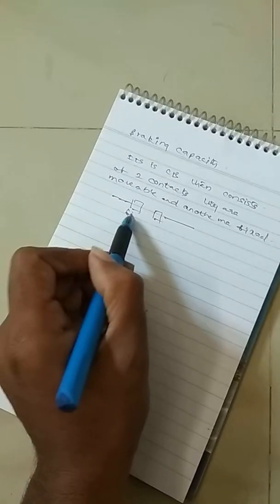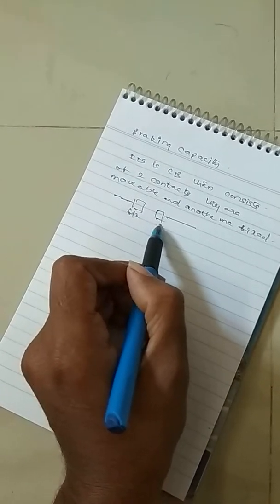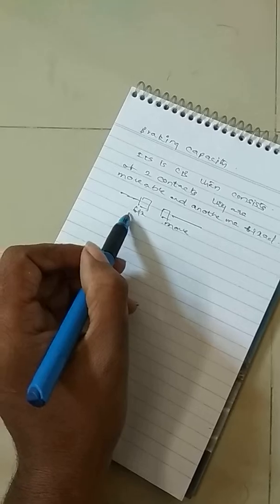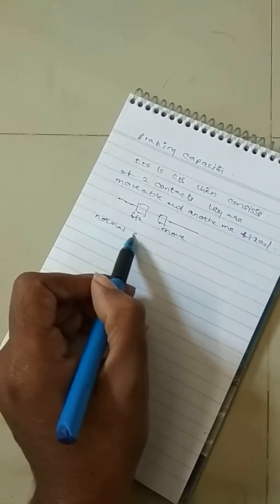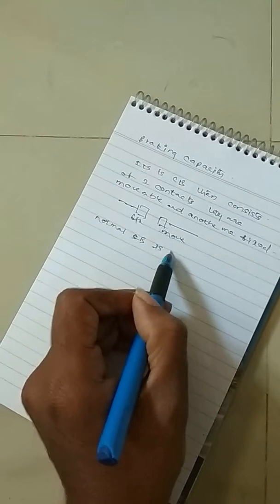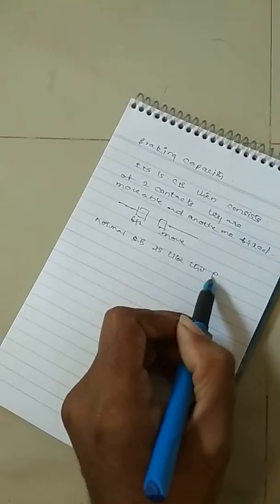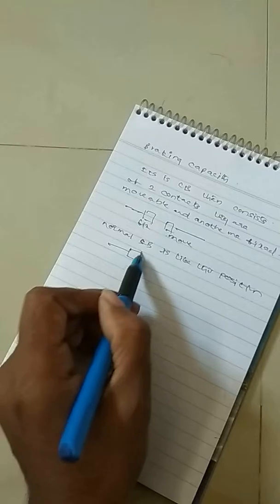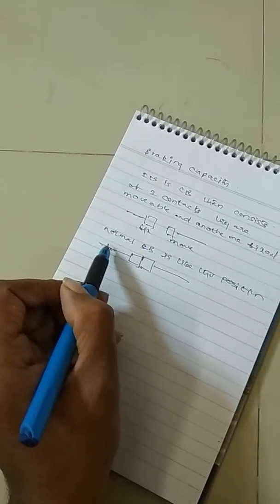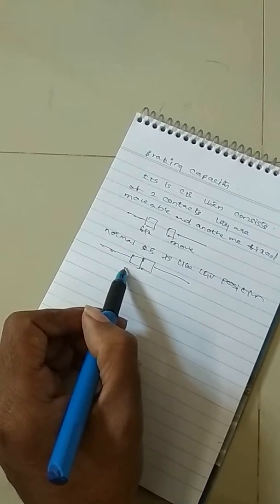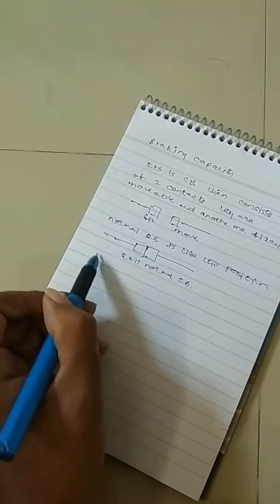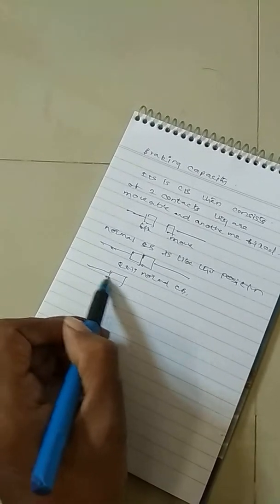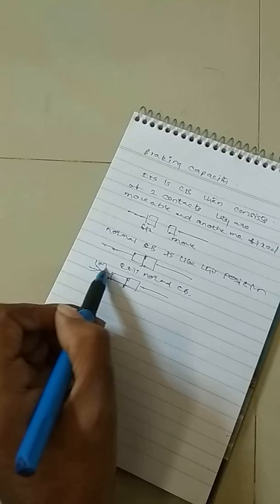This is the fixed one and another one is the movable contact. As a normal switch, the circuit breaker is in this position. It is called a normal circuit breaker flowing 10 amperes input.